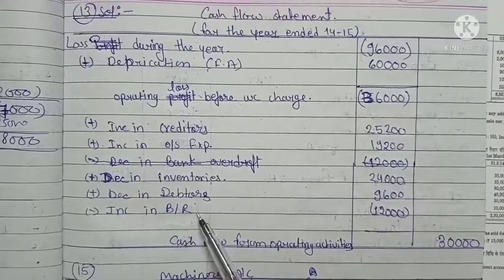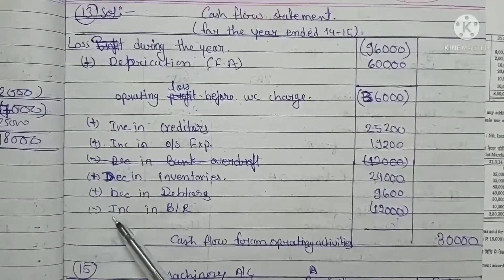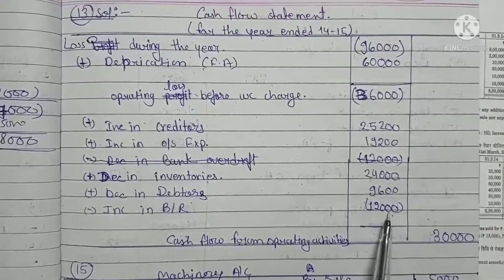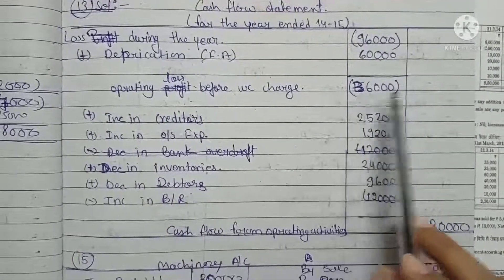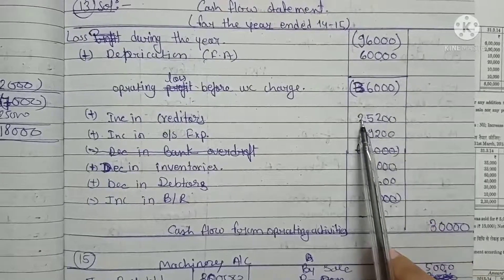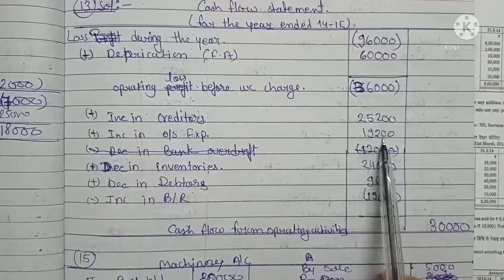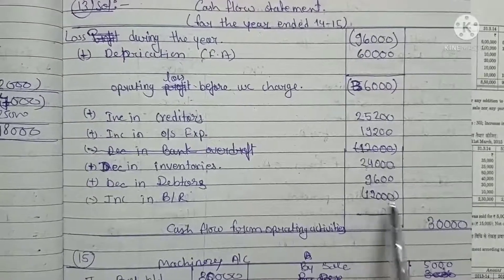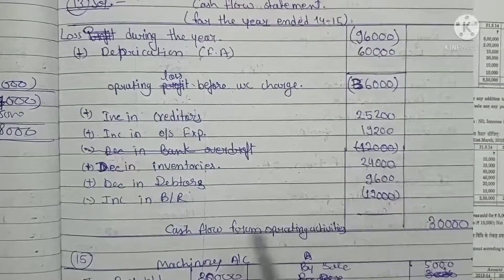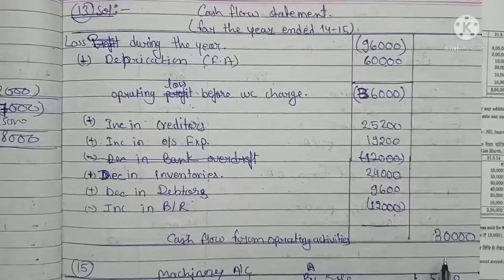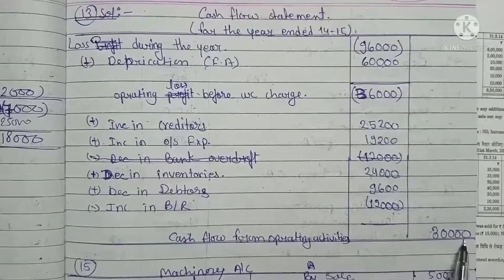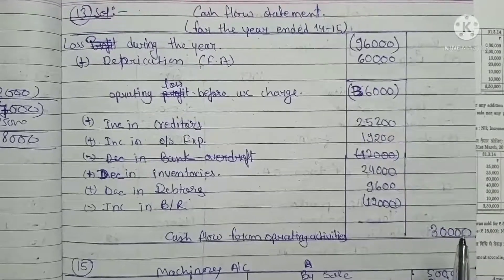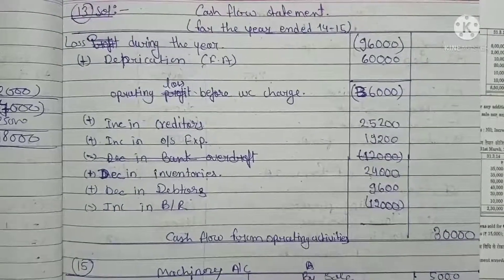Bills receivable is a current asset and has increased, so we subtract Rs. 12,000. After adjusting — subtracting Rs. 36,000 operating loss, adding Rs. 25,200, Rs. 19,200, Rs. 24,000, Rs. 9,600, and subtracting Rs. 12,000 — the cash flow from operating activity is Rs. 30,000. Since there is no information about investing activity or financing activity, this is our final answer.